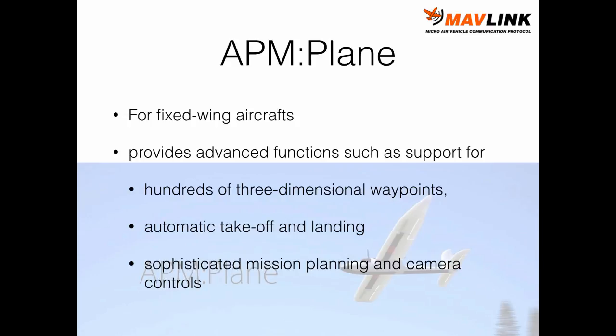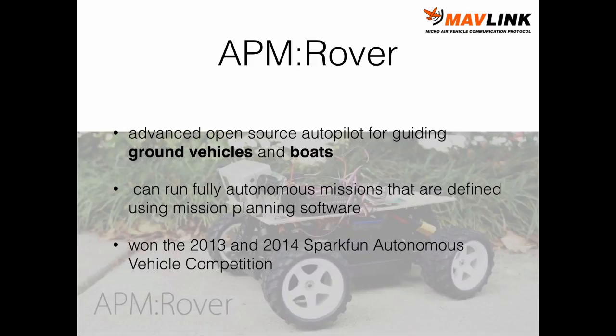The third type is APM Rover, which provides an advanced open source autopilot for guiding ground vehicles and boats. It can run fully autonomous missions defined using mission planner software, which we are going to discover in a few slides. APM Rover also won the 2013 and 2014 SparkFun autonomous vehicle competition.